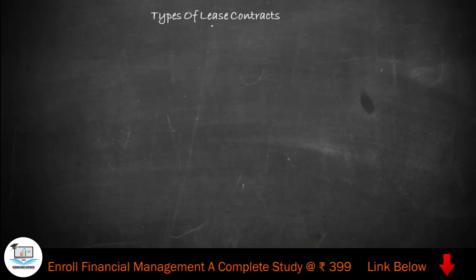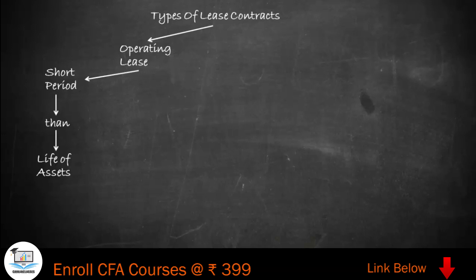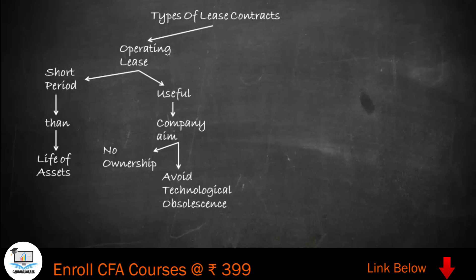In leasing, we have two types of classification. The first is the operating lease, which is given for a short period relative to the life of the asset. For example, if the life of an asset is 10 years, an operating lease might be given for one or two years. These leases are useful for companies that aim for no ownership, want to avoid technological obsolescence, and wish to return equipment at the end of the lease period.